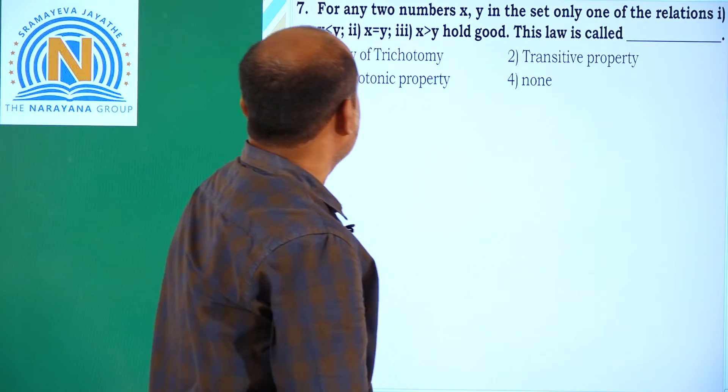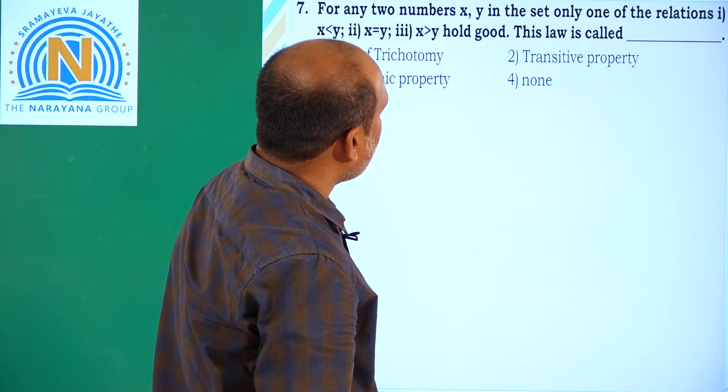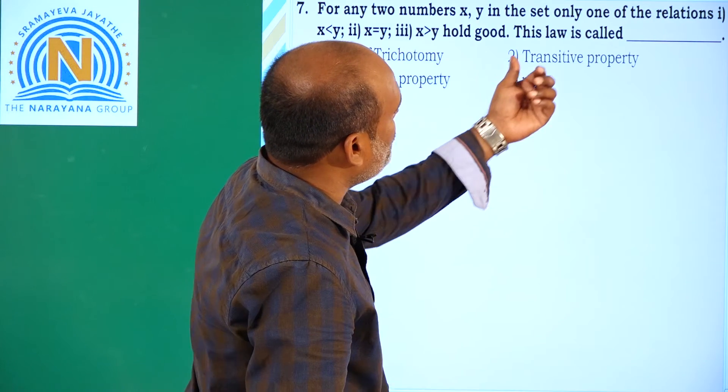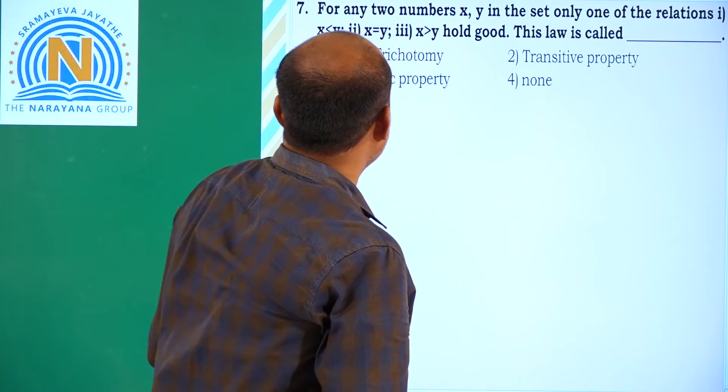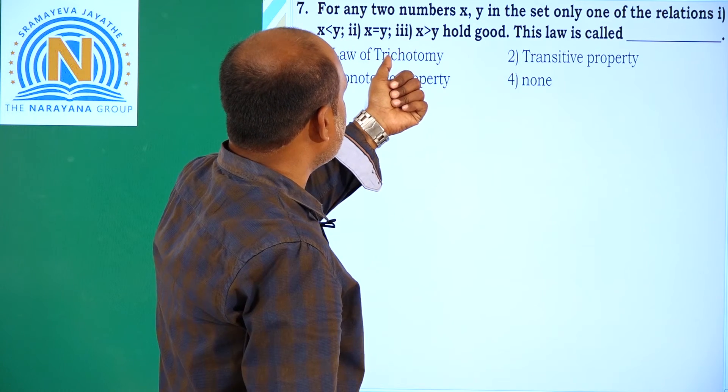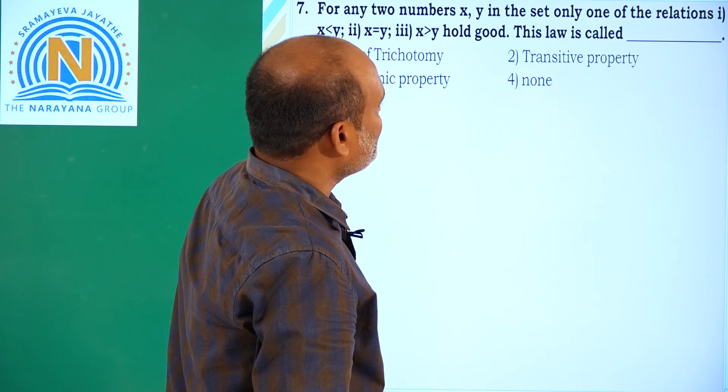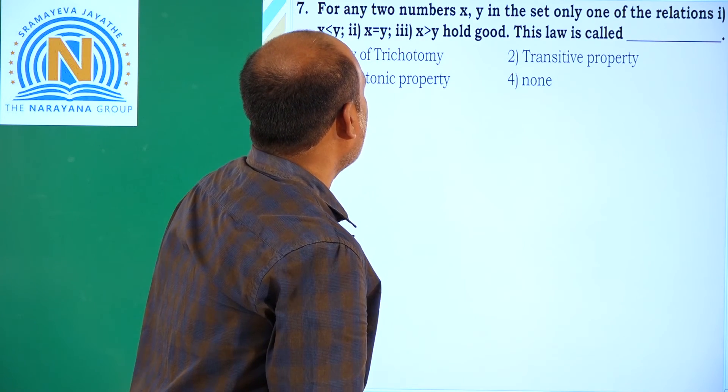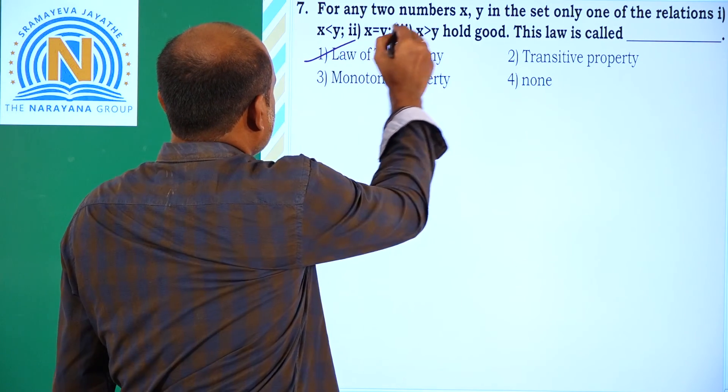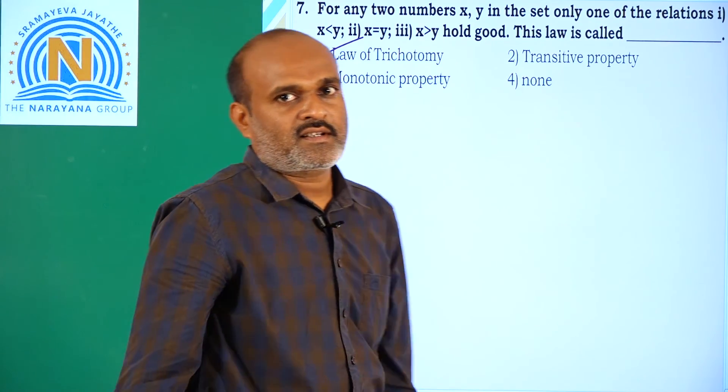Next, for any three numbers x, y in the set, only one of the relations x less than y, x is equal to y, x greater than y holds good. This law is called law of trichotomy. So option 1 is the correct answer.